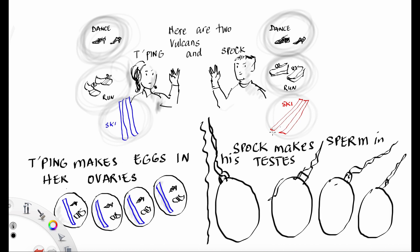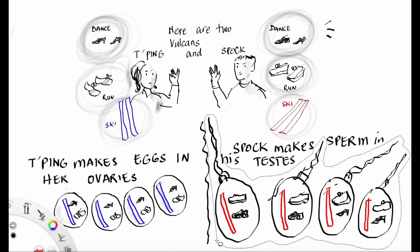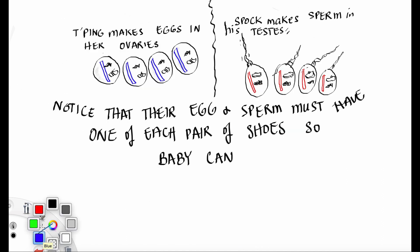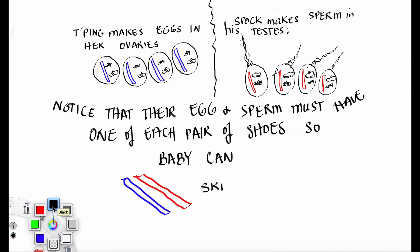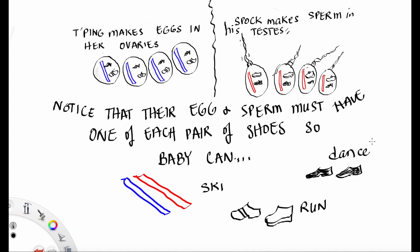Spock also makes sperm. In his sperm is one ski, one running shoe, and a dancing shoe. Half of his sperm has a man's dancing shoe, and the other half has a woman's dancing shoe. Their eggs and sperm must have one of each pair of shoes so that the baby can ski and run and dance.